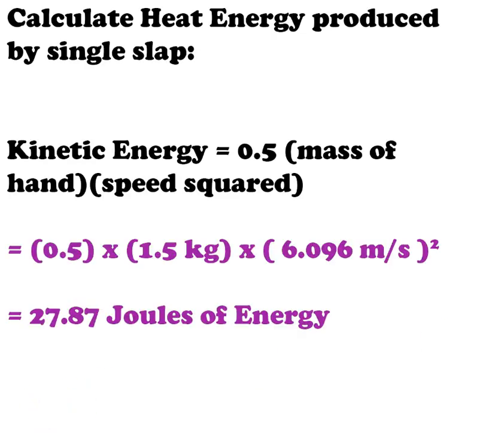Slapping the chicken. Calculate the heat energy produced by a single slap. That is essentially kinetic energy, which is an easy equation. One half times the mass times speed squared. So 0.5, 1.5 kilograms, 6.096 meters per second squared. And I get for each slap roughly 28 joules of energy.